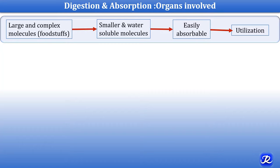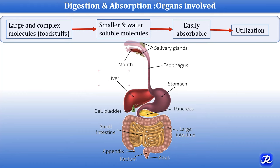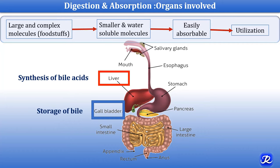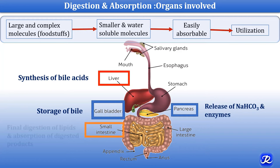The process of digestion and absorption is complicated and it occurs in the gastrointestinal tract, involving many organs. The liver is involved in the synthesis of bile acids and bile salts. The gallbladder plays a role in storage of bile. The pancreas plays a very important role by releasing bicarbonate solution and various enzymes required for digestion, and the small intestine is important in the final digestion of lipids and absorption of digested products.